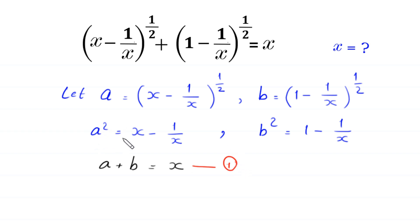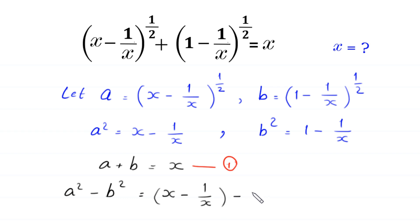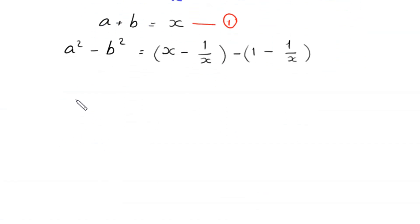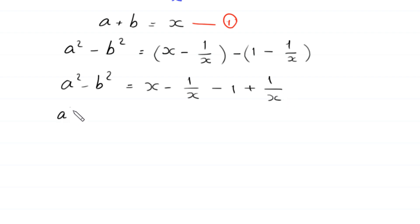From a squared equals x minus 1 over x, we subtract b squared equals 1 minus 1 over x. So a squared minus b squared equals (x minus 1 over x) minus (1 minus 1 over x). Expanding, the negative 1 over x cancels with the positive 1 over x, and we are left with x minus 1 on the right side.